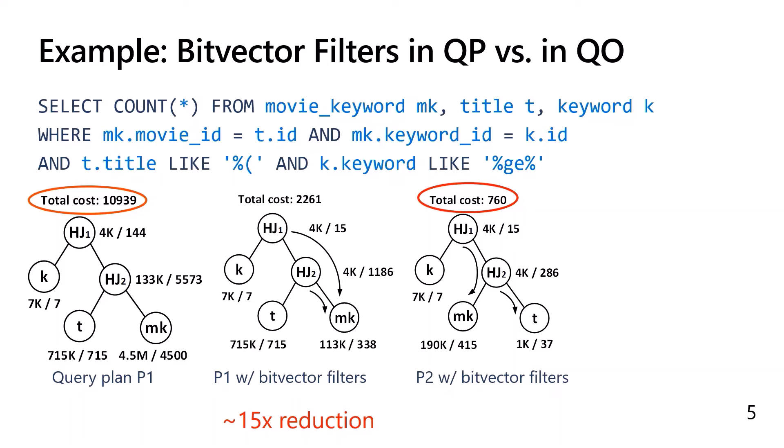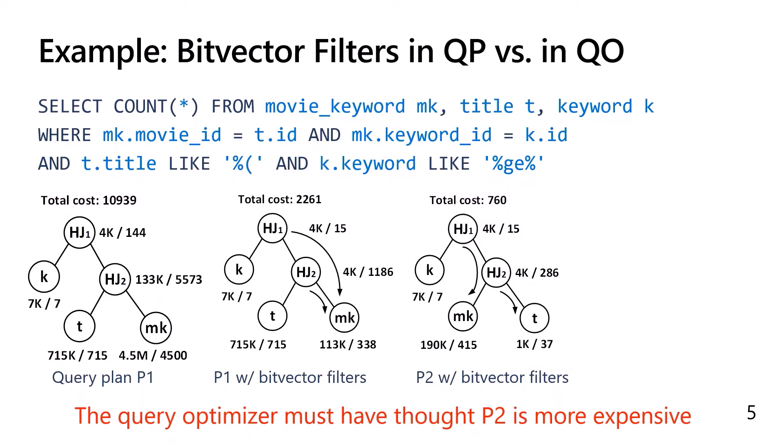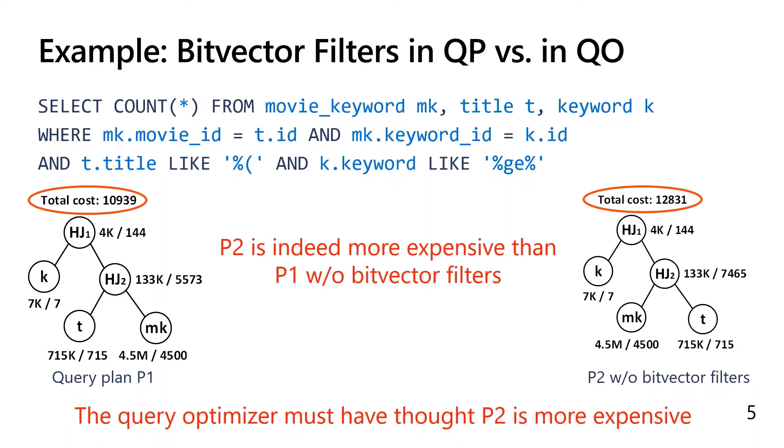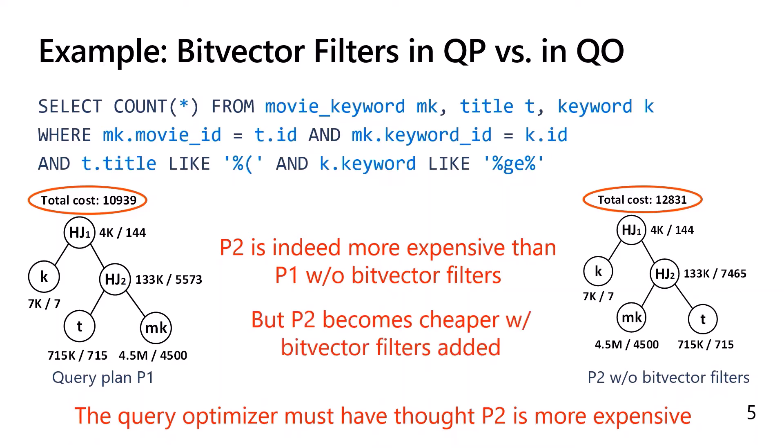Then why are we not getting that plan? Well, we of course want to blame the query optimizer. But think about it — what the query optimizer sees during its plan search is not the two plans with bitvector filters, but the two plans without bitvector filters. With no bitvector filtering, P2 is indeed more expensive than P1. The query optimizer correctly chooses P1 as the optimal plan, but P2 turns out to be cheaper after adding bitvector filters.